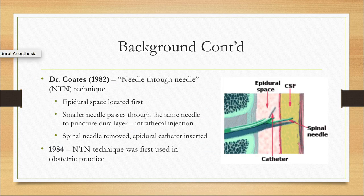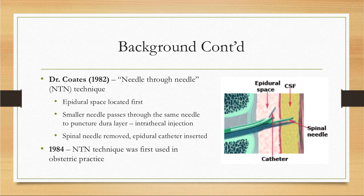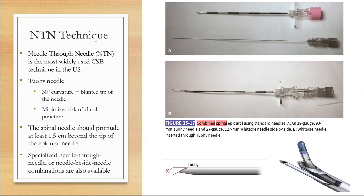Dr. Coates in 1982 introduced what is now known as the needle-through-needle technique. The epidural space is located and then a smaller spinal needle is passed through the epidural needle just beyond the tip until the dural layer is punctured. The local anesthetic is first injected into the subarachnoid space, then the spinal needle is removed and an epidural catheter is placed into the epidural space, giving subarachnoid blockade before epidural catheter placement. Later in 1984, this technique was introduced into obstetric practice. The TUI needle, which has a 30-degree curvature plus a blunted tip, minimizes the risk of dural puncture. The spinal needle should protrude at least 1.5 centimeters beyond the tip of the epidural needle.